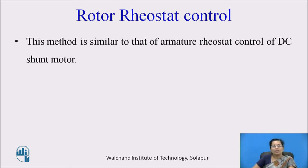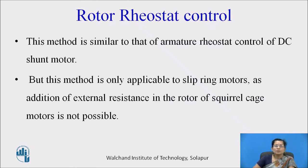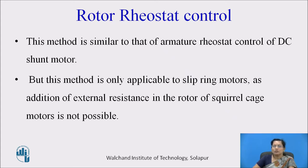This method is similar to that of armature rheostat control of a DC shunt motor, but this method is only applicable to slip ring motors, as addition of external resistance in the rotor of a squirrel cage motor is not possible. For squirrel cage induction motors, we cannot add external resistance — only the conductor bars are used for the rotor. For slip ring rotors, we can add external resistance because the winding is placed on the rotor and slip rings are used to connect the external resistance for this method.